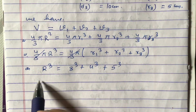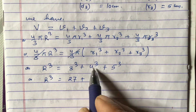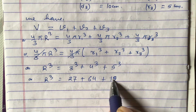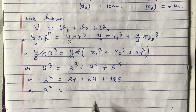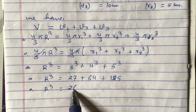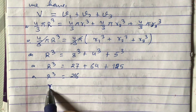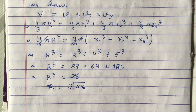So R³ equals 3³ plus 4³ plus 5³, which is 27 plus 64 plus 125, equals 216. Therefore R equals the cube root of 216, which equals 6 centimeter.